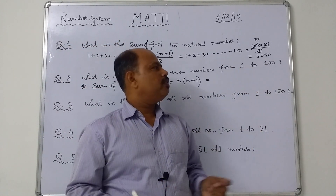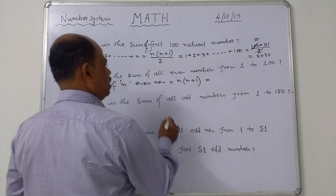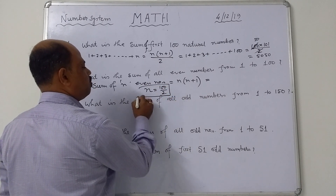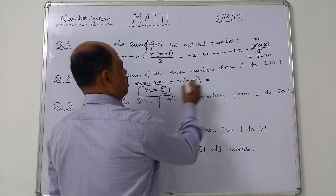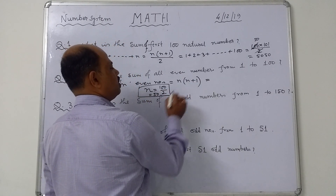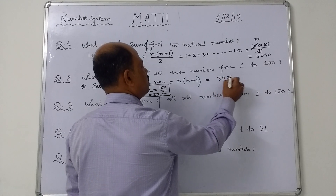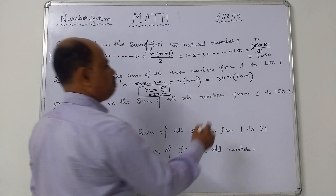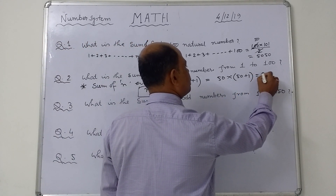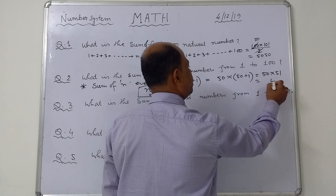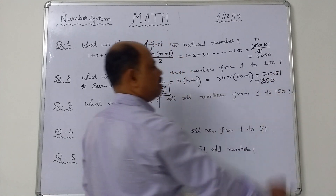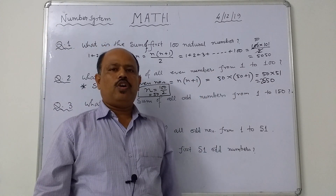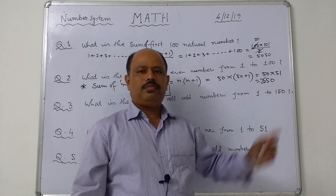The number of even terms from 1 to 100 will be 50. Here n equals 100 by 2, so put the value of n as 50. Then 50 into 50 plus 1, that is 50 into 51, equals 2550. So the sum of all even numbers from 1 to 100 is 2550.